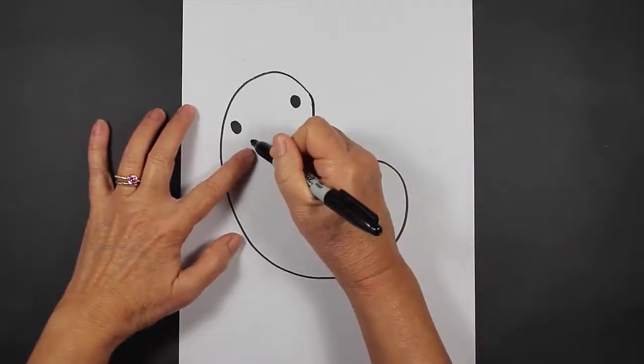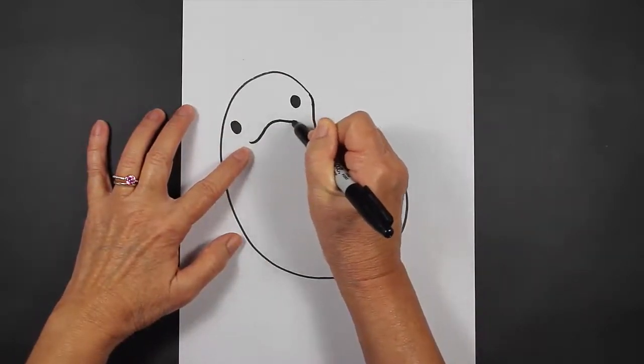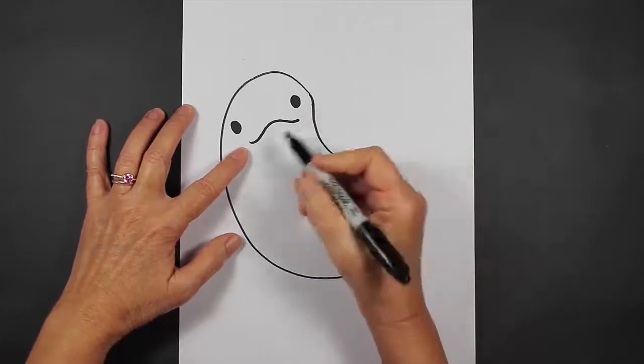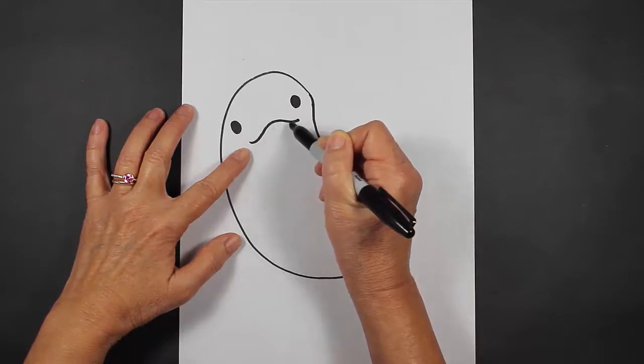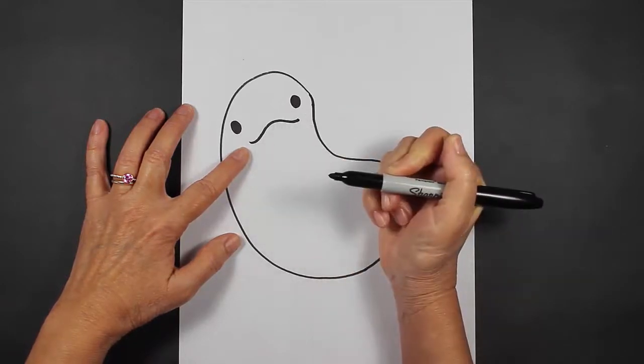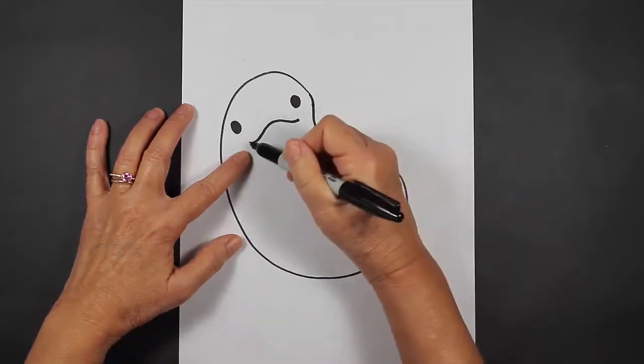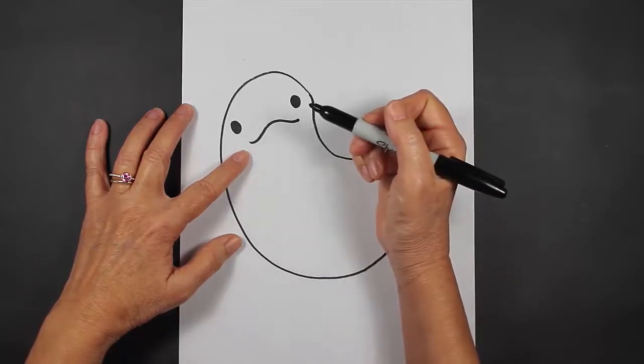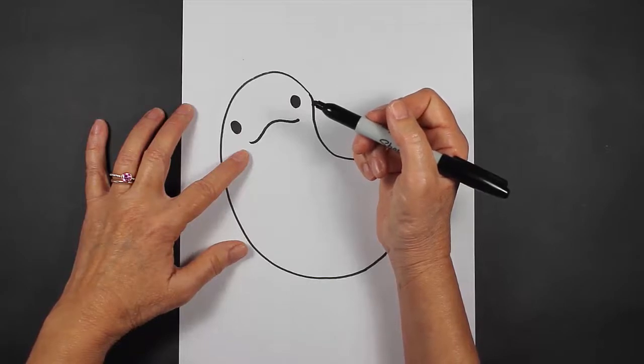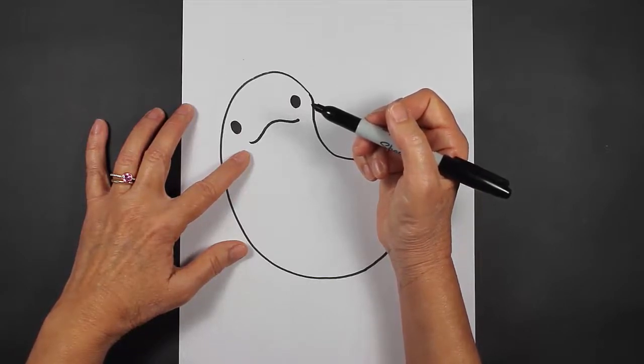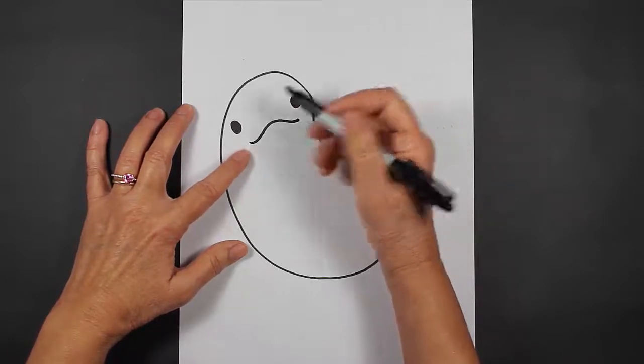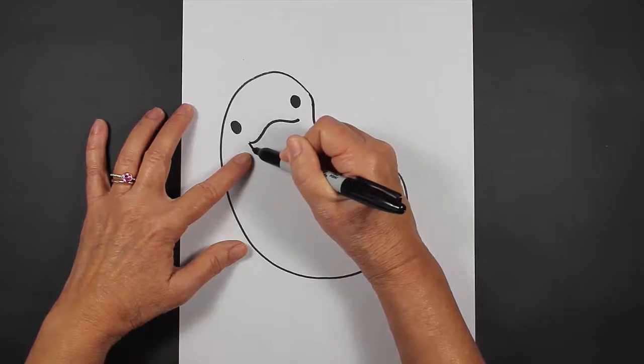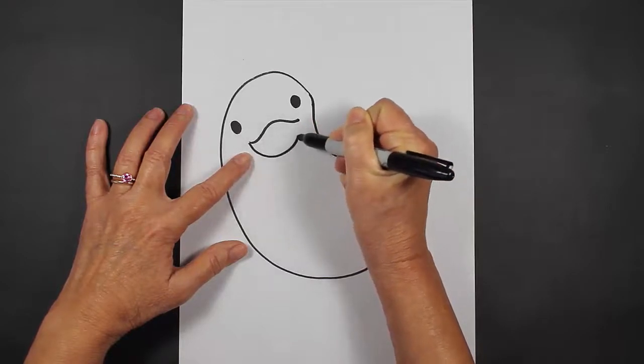For our platypus's bill, we make a line that looks like this. So we start low, we curve up, we come around, we come down, and we stop. That's going to be the platypus's bill. And if you'd like to look at a picture of a real platypus, ask your parents to show you a picture, maybe online, make sure you get their permission, and you can see what their bill looks like. It's a very interesting looking nose.